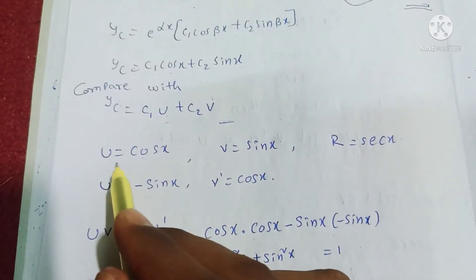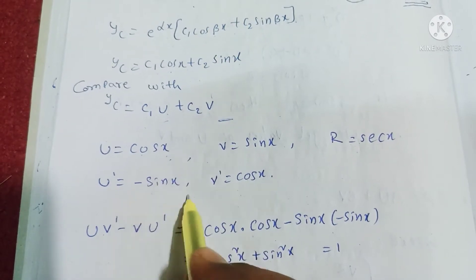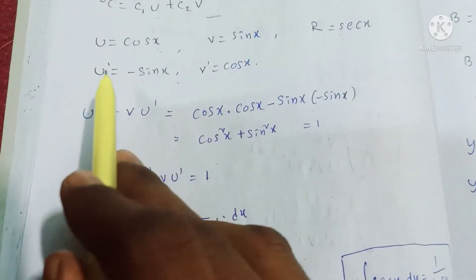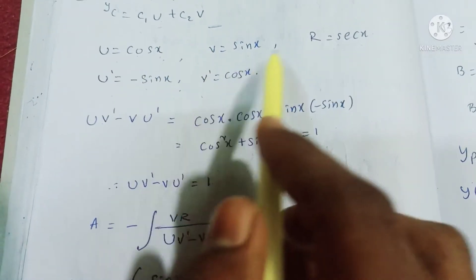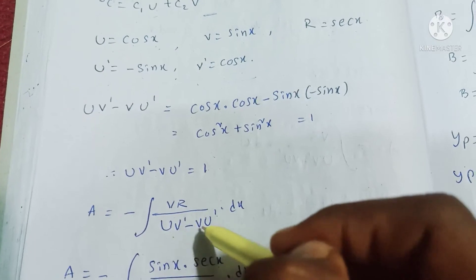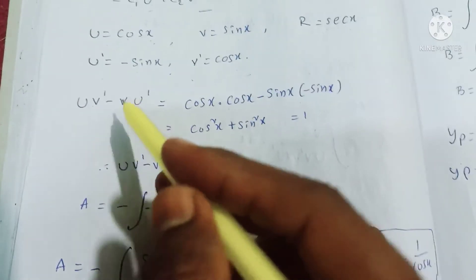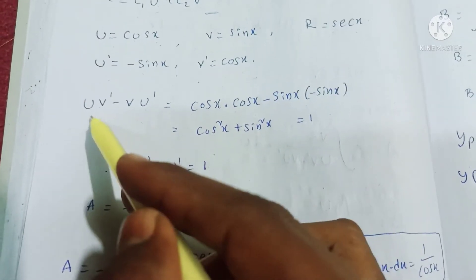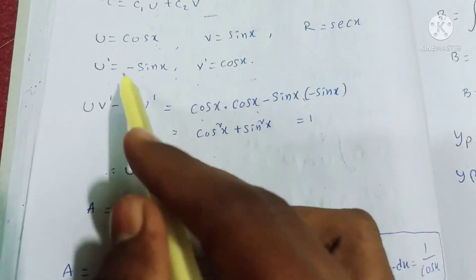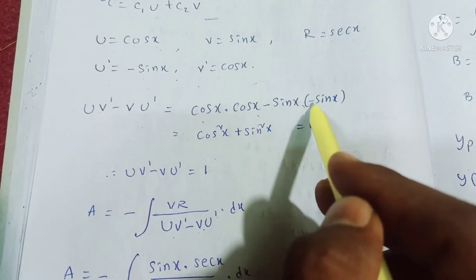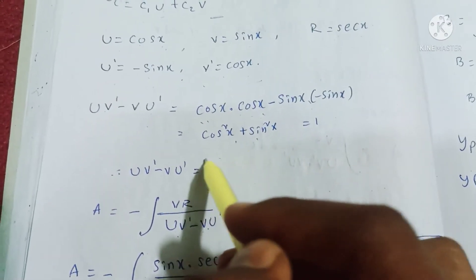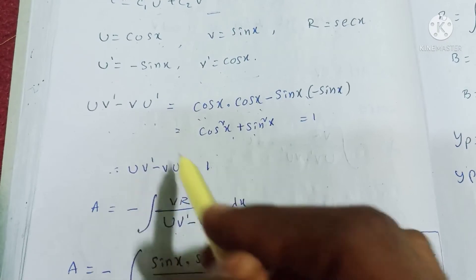Taking the derivatives: u = cos x, so u′ = −sin x; v = sin x, so v′ = cos x. Also, r = sec x. Now computing the Wronskian: uv′ − vu′ = cos x · cos x − sin x · (−sin x) = cos²x + sin²x = 1.